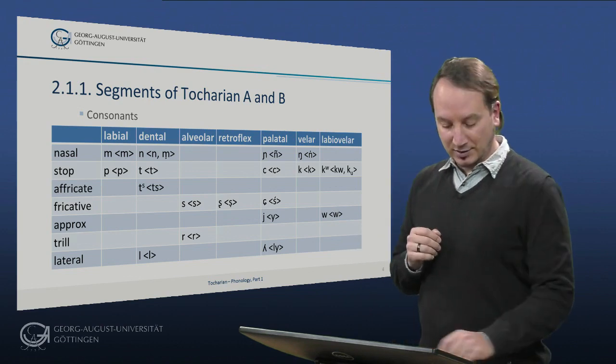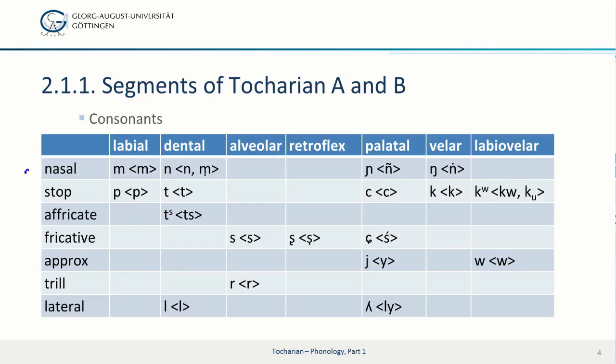So if we start from the top right with the nasals, so here we have N, N, the palatal N and the velar N. Coming down to the stops, we have P, T, the palatal T, the velar Q and the labiovelar Q, for which there are different orthographical variants in Tocharian as you can see indicated in the square brackets.